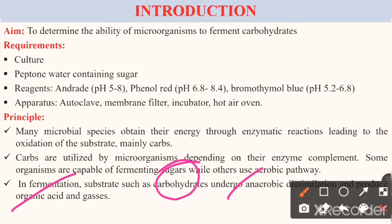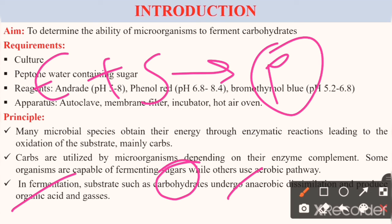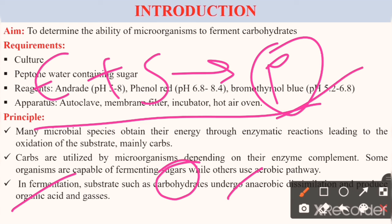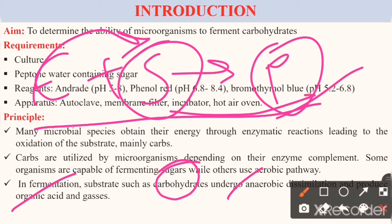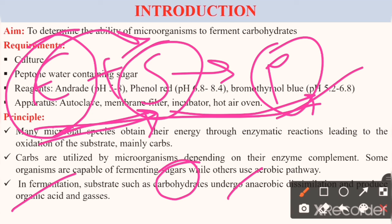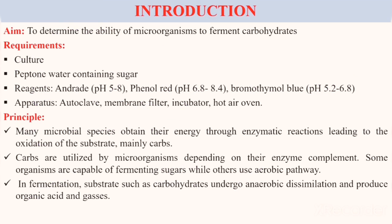We are familiar with the concept: enzyme plus substrate gives us product. This is the simple principle used in fermentation — microbes use this during fermentation and give us products. If you have a substrate, the enzyme must act on it, and only then will the substrate give us a product. Enzymes are specific in their action, so we check the ability of each microorganism to determine which carbohydrates will be fermented by that specific microorganism.